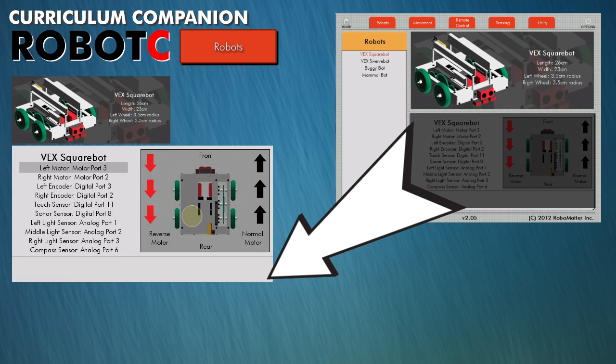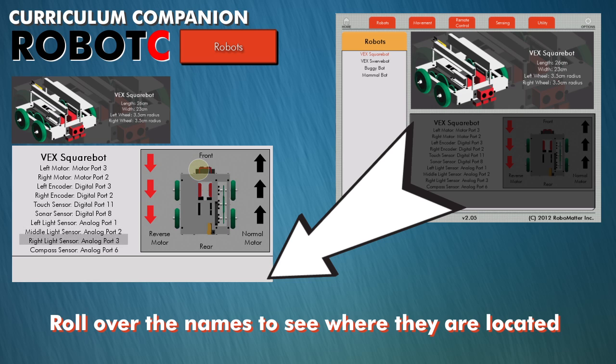Once a robot is selected, all the motor and sensor names and ports are listed. Rolling over the names identifies where they are located.